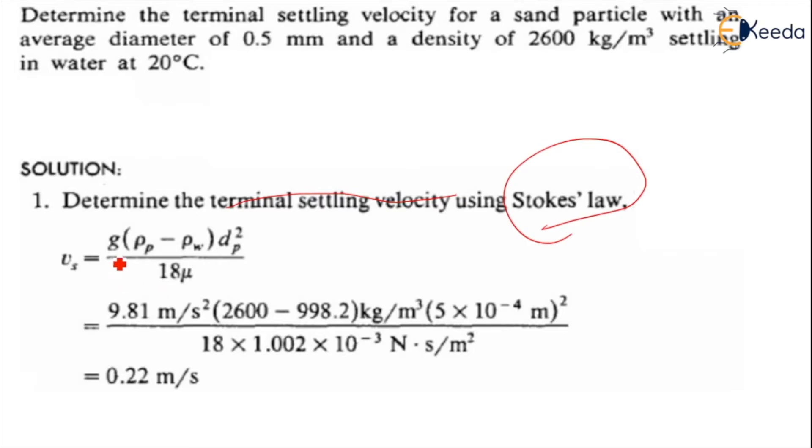The formula is Vs equals g times (ρp minus ρw) times d squared divided by 18 μ. The g value is 9.81 m/s², ρp is 2600 minus ρw which is 998.2 or 1000. The dp value is 5 times 10^-4 meter when converted to meters, and μ is 1.002 times 10^-3 which is the standard value. After calculation, we get Vs equals 0.22 meter per second.